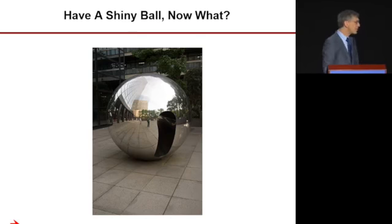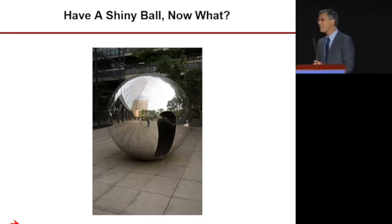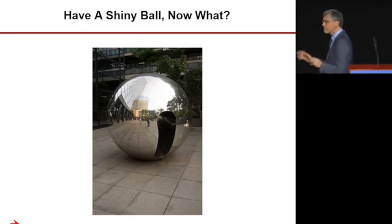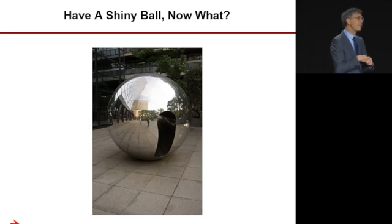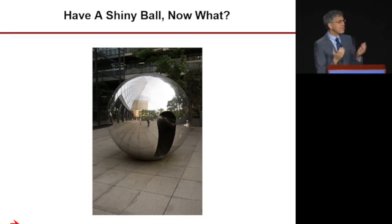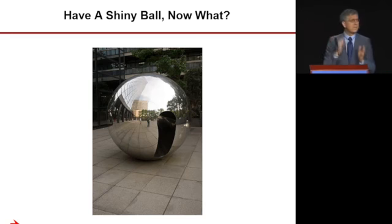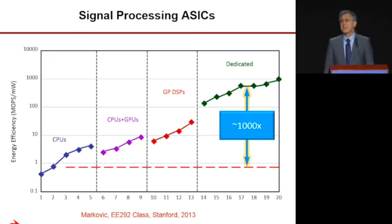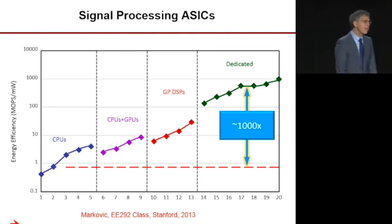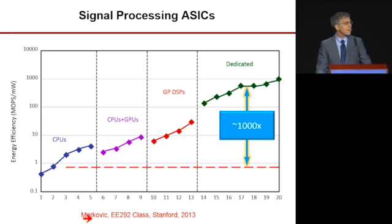CPU designers and digital guys have been optimizing these cores and GPUs for a long time — we have a really shiny ball. So the question is, what do we do now? This has led to a lot of discussion about building specialized hardware. Dan Markovic created a graph showing energy per op for CPUs, CPUs and GPUs, DSPs, and then dedicated specialized hardware — and the specialized hardware is a thousand times better in energy per op than a general purpose processor.